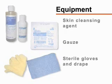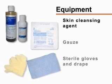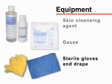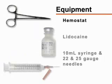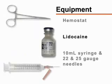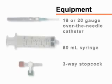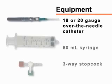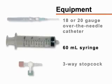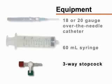For sterile preparation of the site and administration of anesthesia, you will need a skin cleansing agent, sterile gauze, sterile gloves, a sterile drape, a hemostat (which is optional), one or two percent lidocaine, and a 10 milliliter syringe with a 22 to 25 gauge needle. For the collection of pleural fluid, you will need an 18 to 20 gauge over-the-needle catheter, a 60 milliliter syringe, and a three-way stopcock.